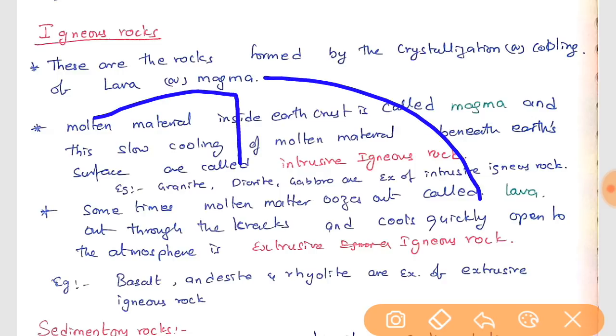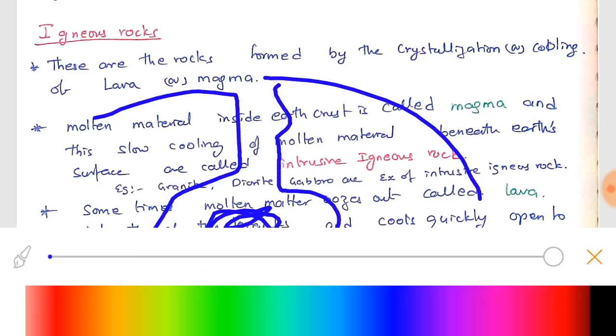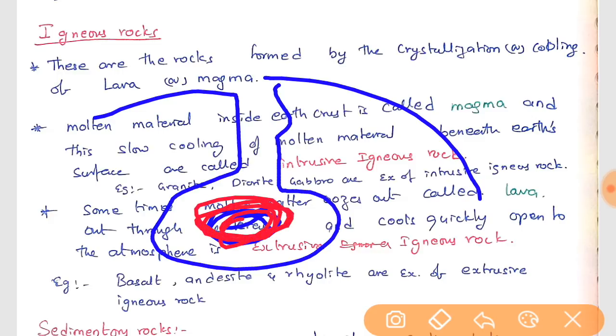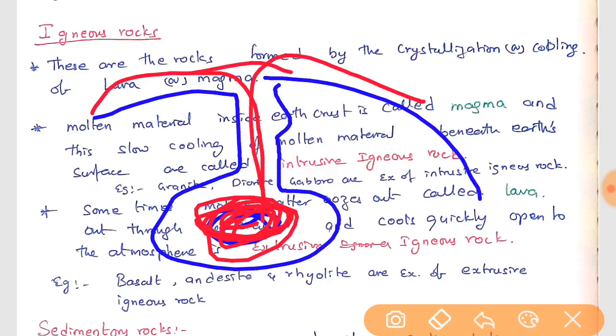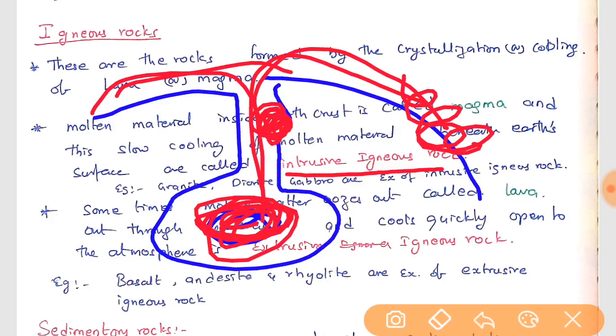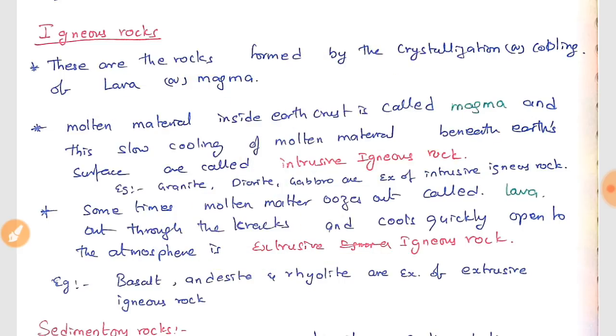This is lava and this lava comes out and cools down. This cools down and some of the lava will be inside the earth itself. If this lava cools inside the earth, then it is called intrusive igneous rock. If it comes out and if it cools here, then it is called extrusive igneous rock. That's the difference.